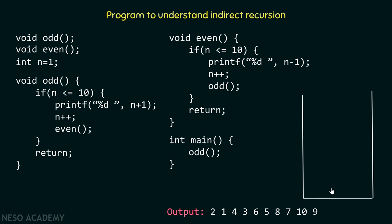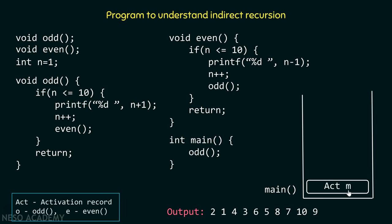Suppose we have a stack, and initially the main function is called — the activation record of main is created on the stack, denoted as act(M). M means main, O means odd function, E means even function, and act means activation record. Since inside the main function we call the odd function, control transfers to odd and the activation record of the odd function gets stored on the stack.